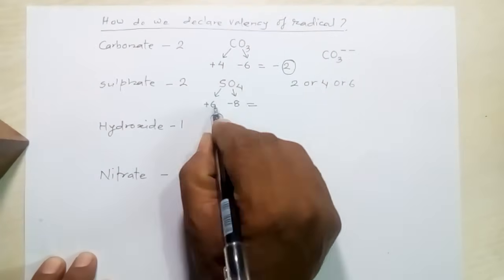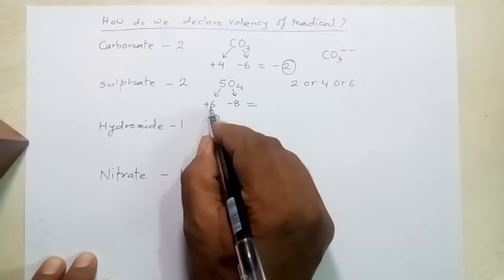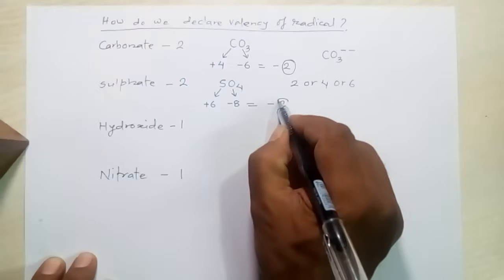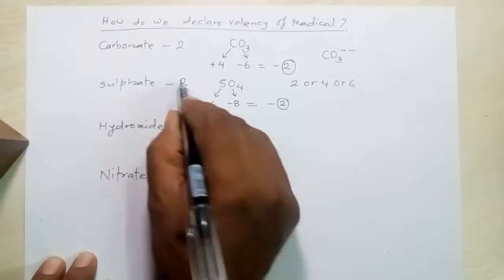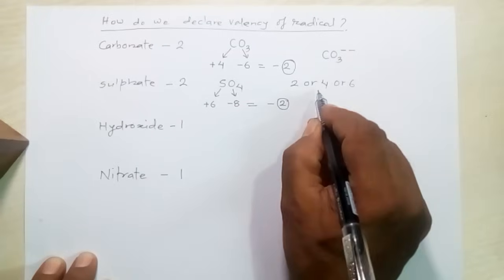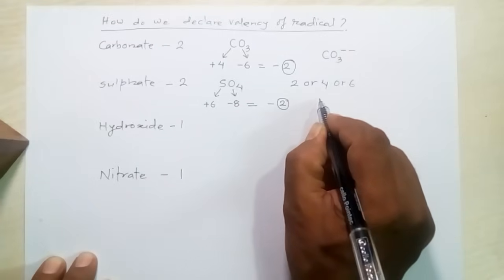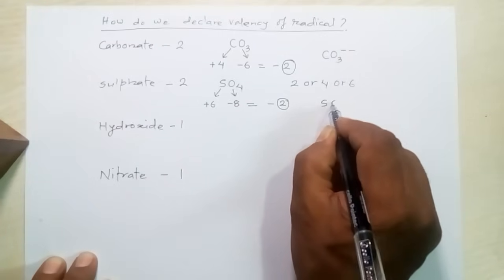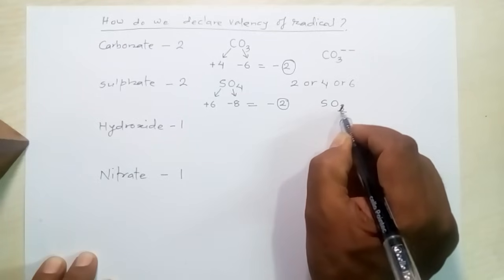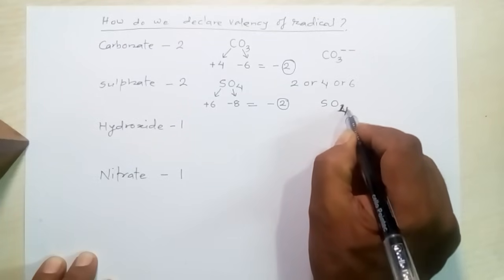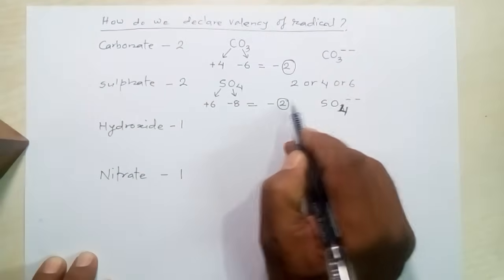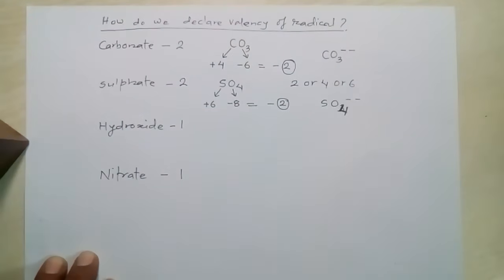Taking the sum: +6 and −8 gives −2. This 2 represents the valency of sulfate. The minus sign says that sulfate is an electronegative radical. When it forms an ion, it is represented as SO₄²⁻, because there are 2 excess electrons.